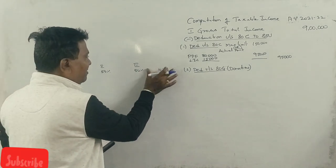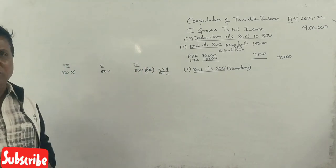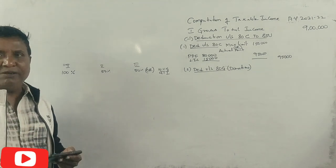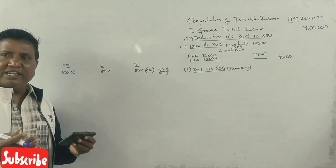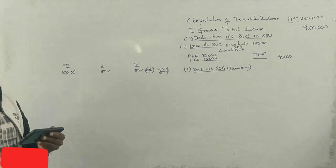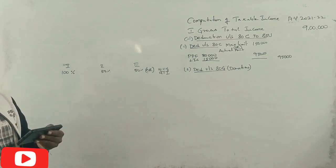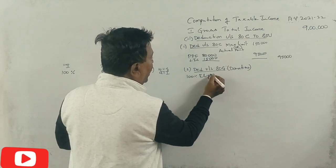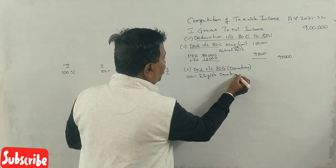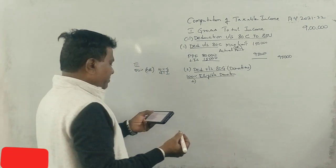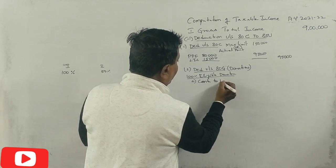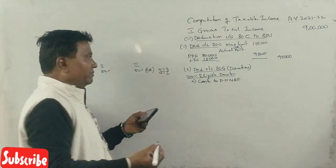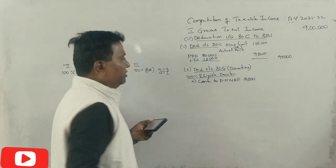The first category is 100% or 50% of gross total income. The first thing is that the donation must be notified by the central government. If it is notified, you will get 100% of the gross total income as deduction. This is the 100% eligible donation category. Contribution to PM's National Relief Fund is 10,000 rupees — full amount qualifies at 100%.